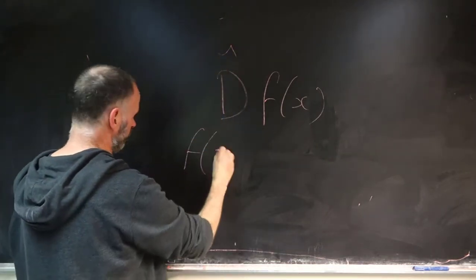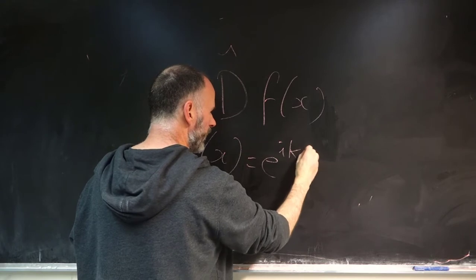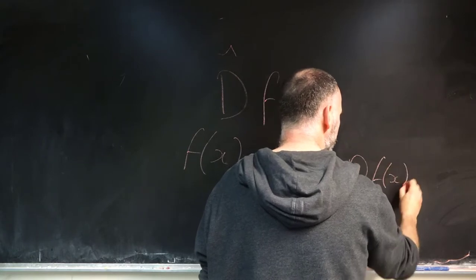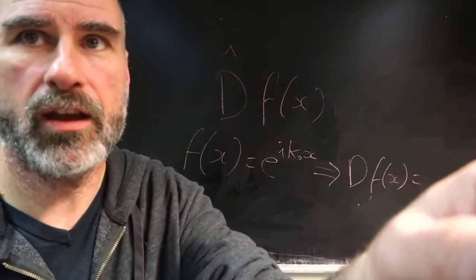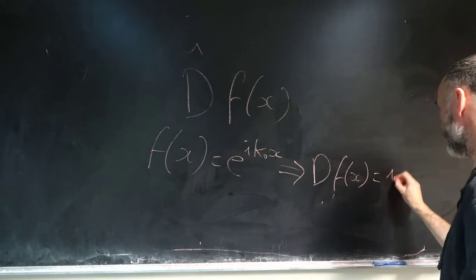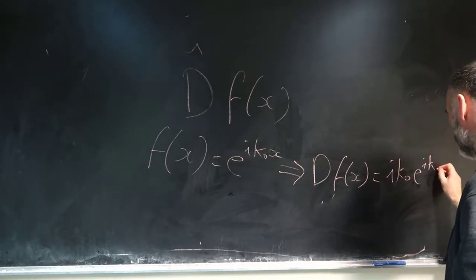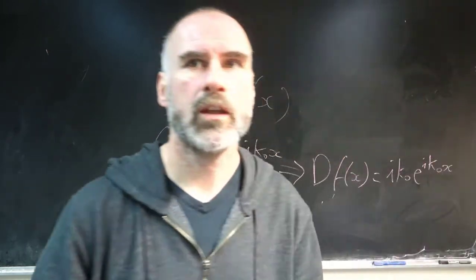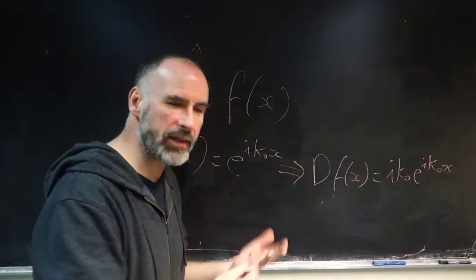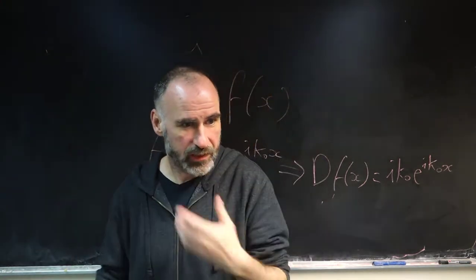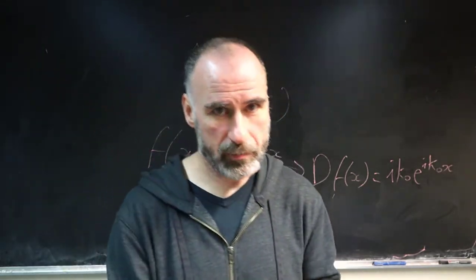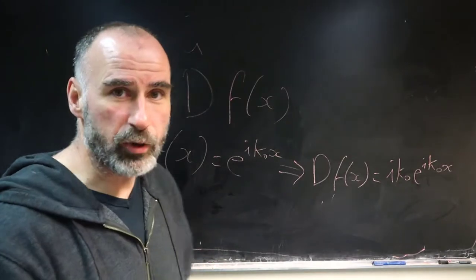So let's say we've got D operating on a function f of x. Let's say our function is something we've seen before, say e to the i k zero x. That implies if D is operating on f of x, that's going to be equal to nothing more than just the derivative. Just the derivative of this function, which is i k zero e to the i k zero x. So that's nothing new. We've seen it before. It's just the idea of operator operating on function. You've got a mathematical operation that gives back another function. That's all an operator is.